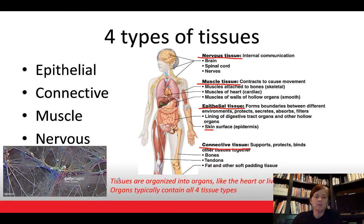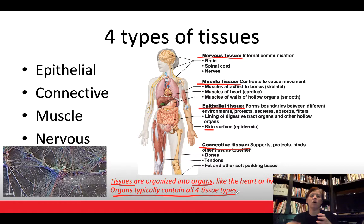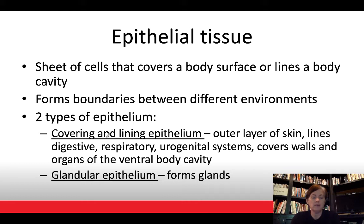Tissues are organized into organs — the heart is an organ, the liver is an organ, and the skin is an organ. Typically, organs contain all four tissue types. So within the heart, it actually contains all four of these tissue types. We're going to go through each tissue type individually and talk about some details with each one.